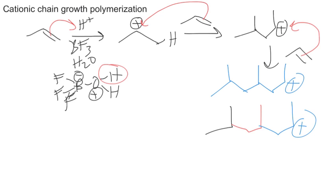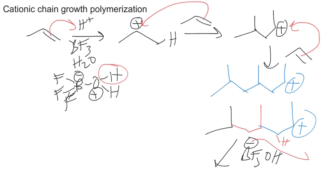At the end of the reaction, one of the molecules of BF3·OH that's left over can come over and deprotonate, pushing that electron pair towards the positive charge to get rid of it, making the Zaitsev or more substituted alkene. This is just a trimer at this point.